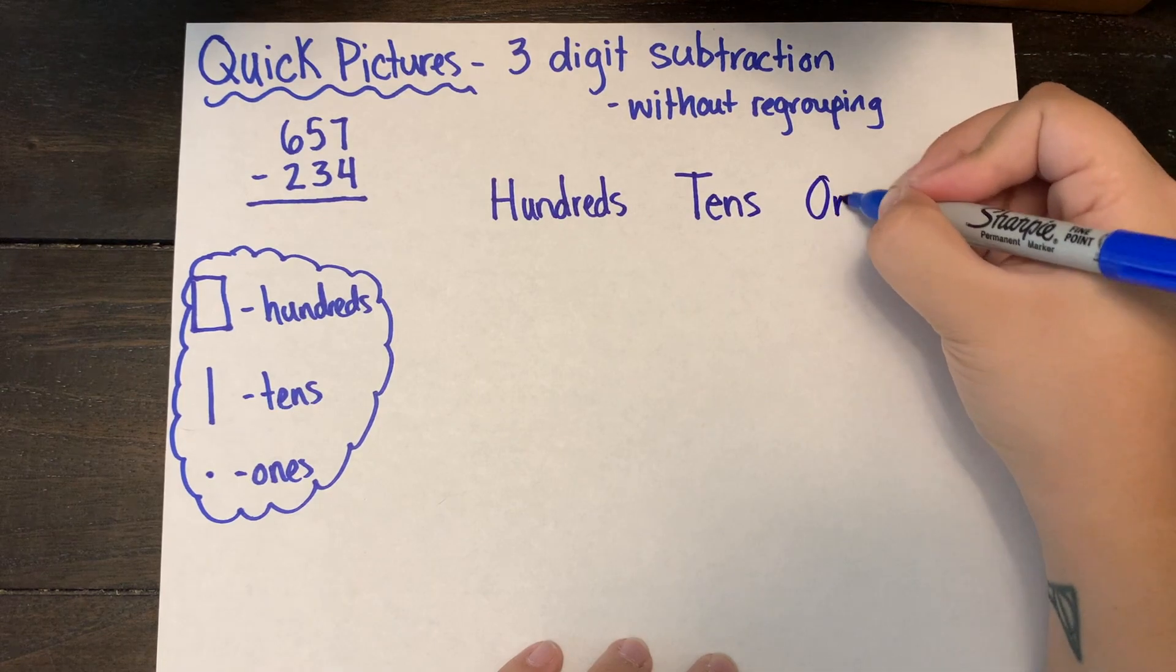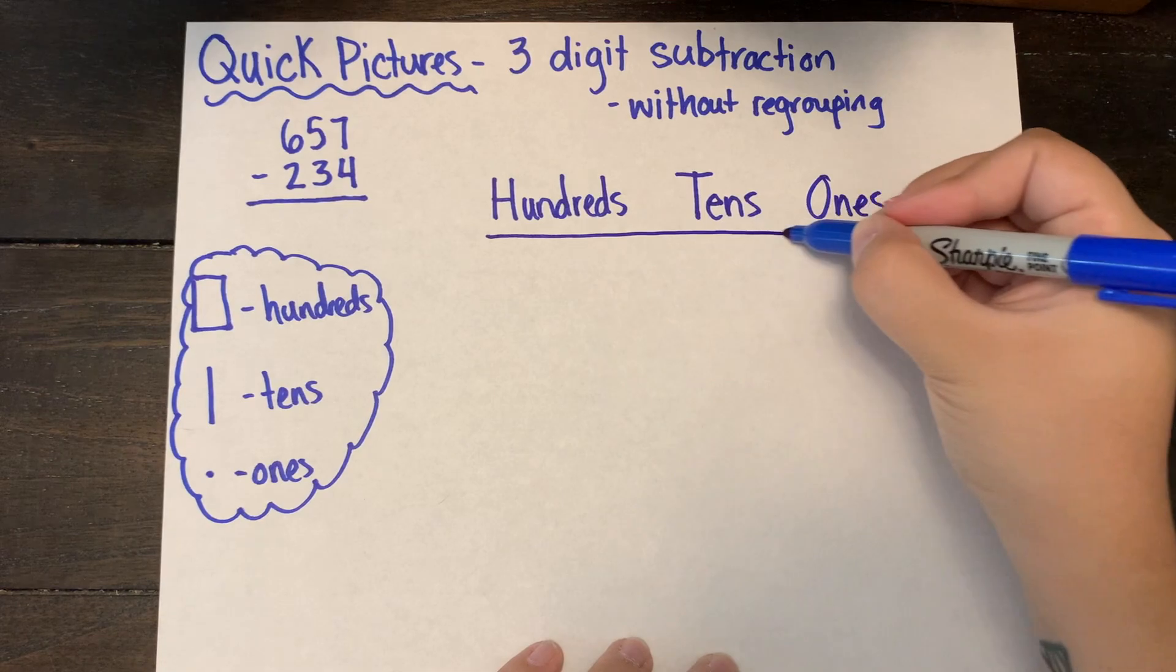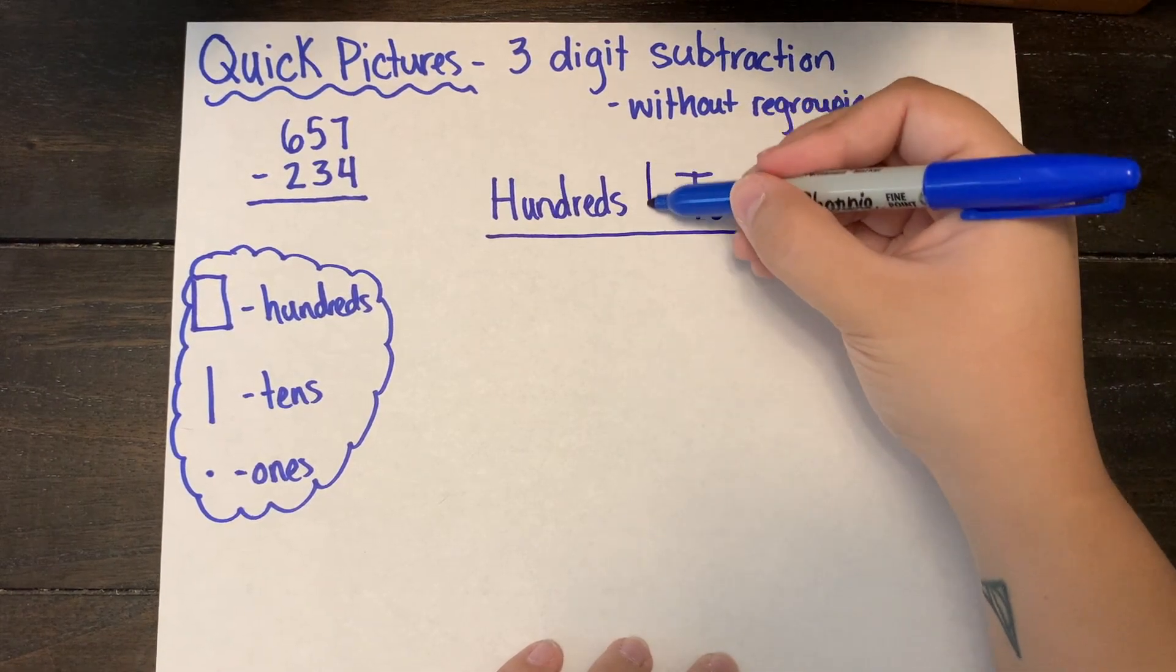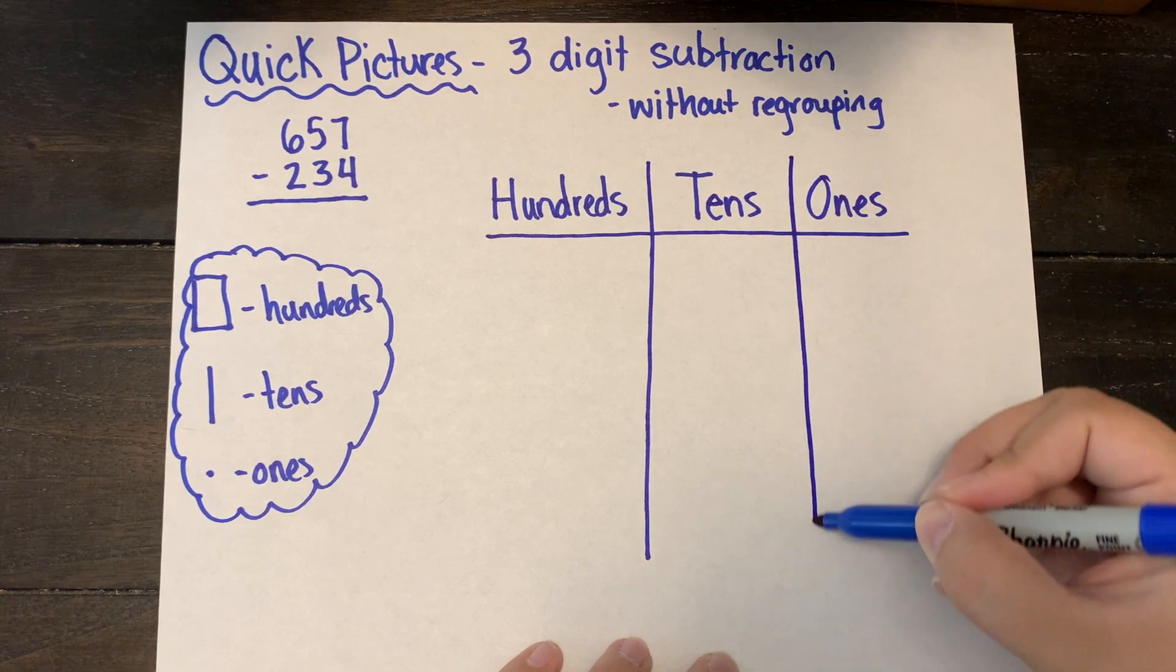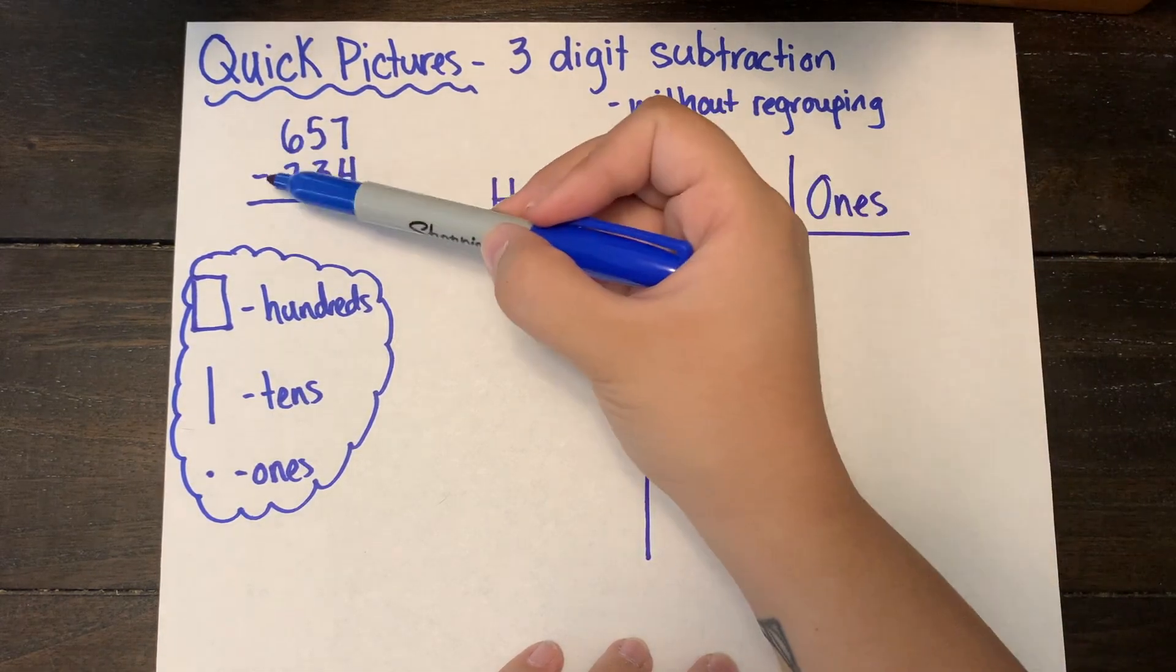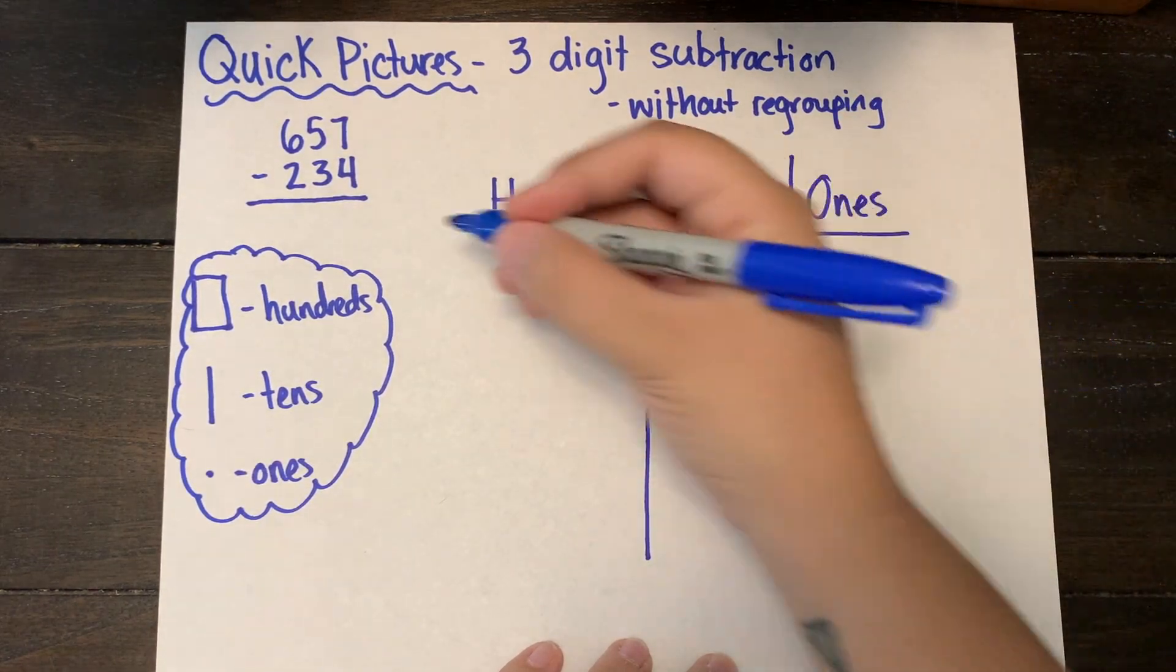Because it is a subtraction problem, I'm only going to be drawing my minuend, which is the first number in a subtraction problem. I'm only going to draw the minuend because then I'm going to take the subtrahend, which is the number you are subtracting, or you're taking away.